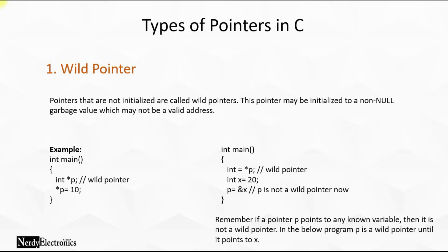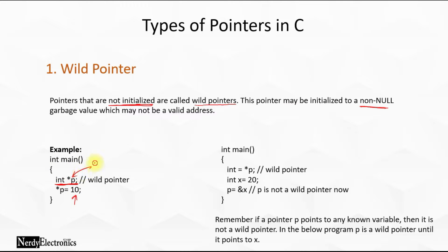First off is the wild pointer. Wild pointers are pointers that are not initialized. So when we declare a pointer and we do not initialize it, it is called a wild pointer. These pointers may be initialized to a non-null garbage value which may not be a valid address. For example, if we write 'int *p' — we are declaring a pointer but not assigning any memory location to it. When we then assign a value like '*p = 10', we do not know to which location that value 10 is going to be written. Since we have not initialized this pointer, this is called a wild pointer.